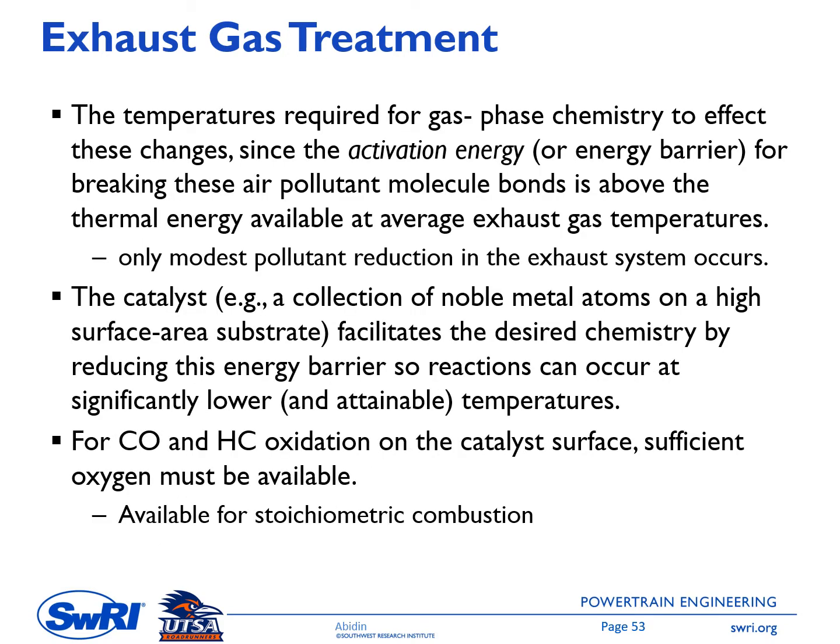If we rely on chemical processes to reduce air pollutants at the typical exhaust gas temperature, only modest pollutant reduction occurs. This is because the activation energy — the energy barrier for the chemical process used to break the air pollutant molecule bonds — is above the thermal energy available at typical exhaust gas temperatures. The catalyst, which is a collection of noble metal atoms on a high surface area substrate, facilitates the desired chemistry by reducing this energy barrier, so reactions can occur at significantly lower temperatures.